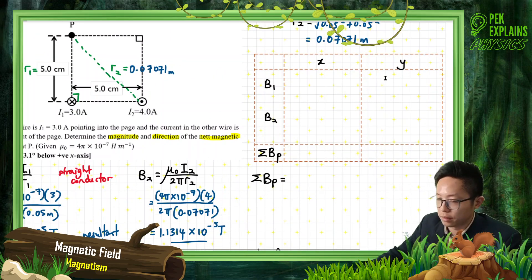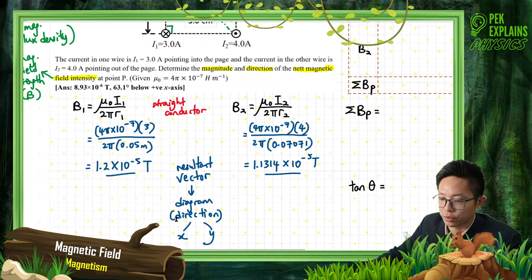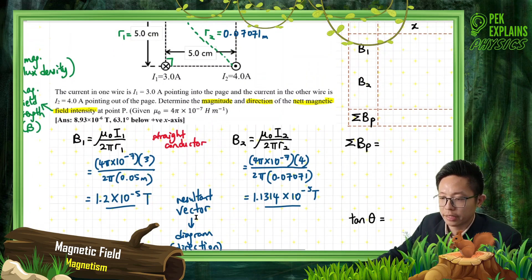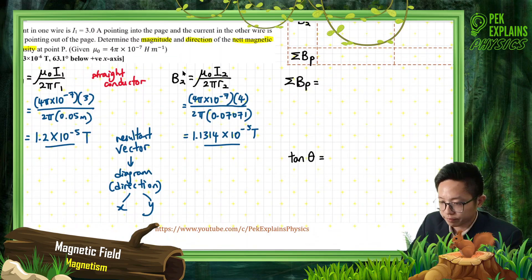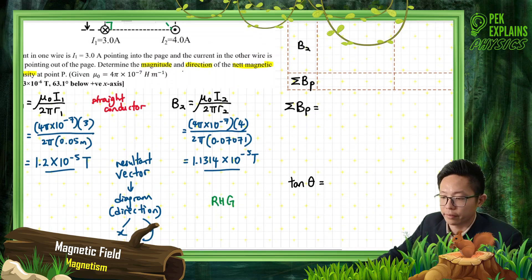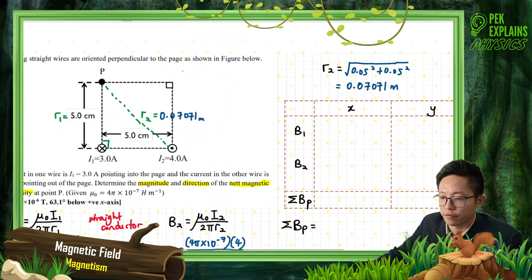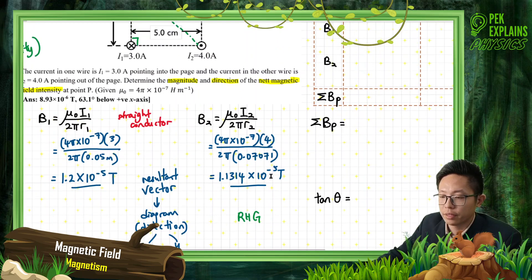Before that, we need to know the direction of each field. For direction, we use the right-hand grip rule.